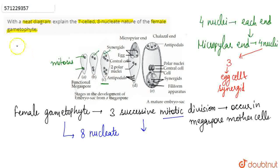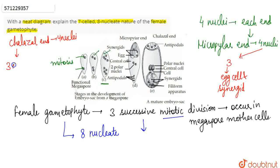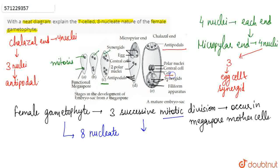At the chalazal end, we again have four nuclei. Out of these four nuclei, three nuclei differentiate as antipodal cells. So three nuclei from both the chalazal end and the micropylar end form the antipodal cells and the egg cell and synergids respectively.